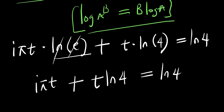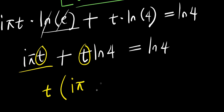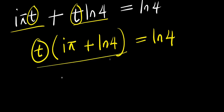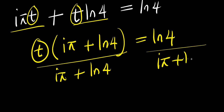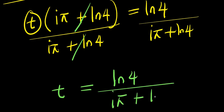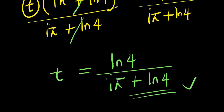Now, there is t in both terms, so we can factor it out. We have t times the quantity i times pi plus natural log of 4, equals natural log of 4. Isolating t, we divide both sides by i times pi plus natural log of 4. So t equals natural log of 4 divided by i times pi plus natural log of 4. This becomes our solution based on the identities we have used so far.